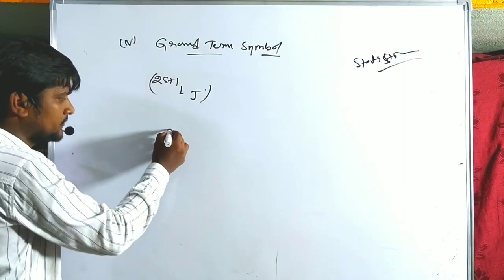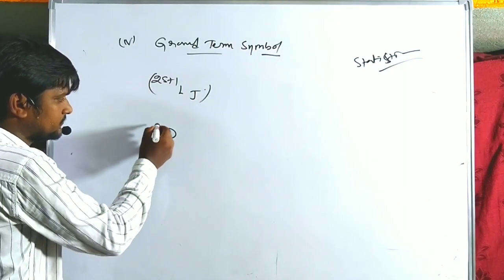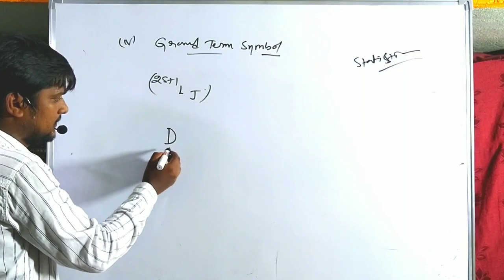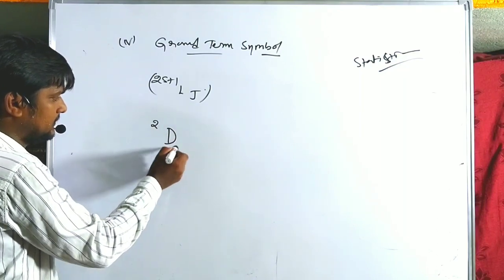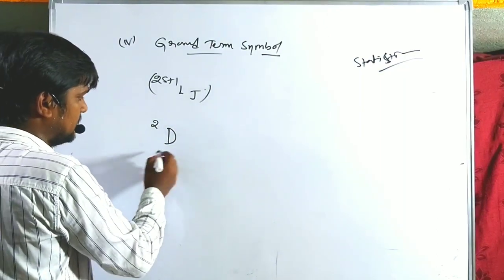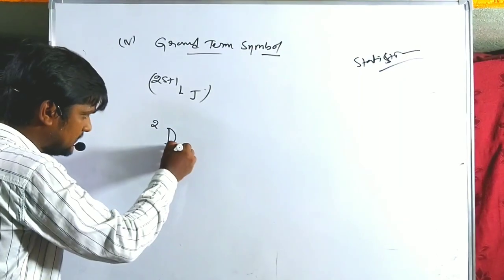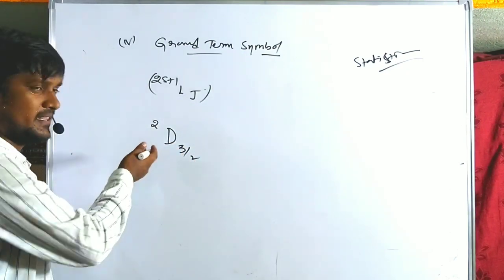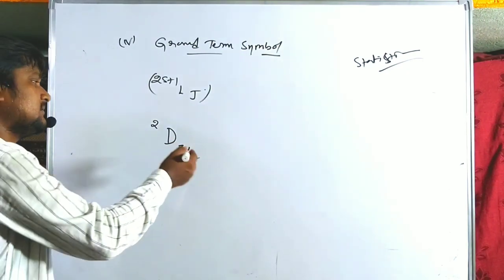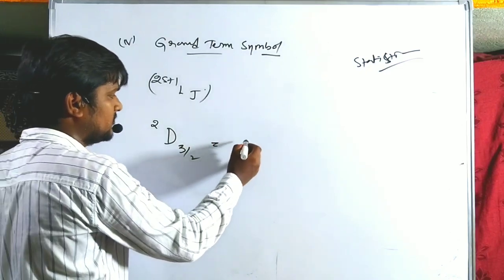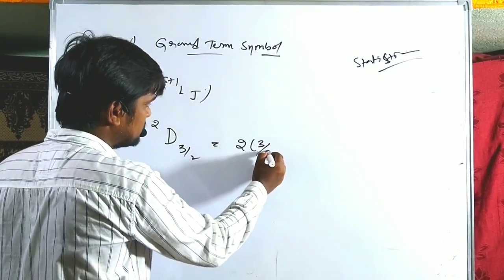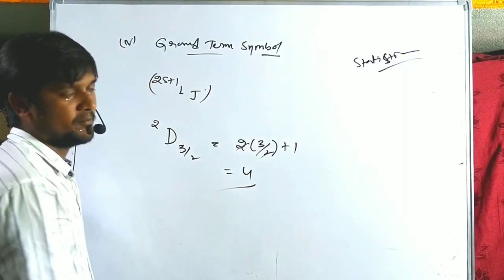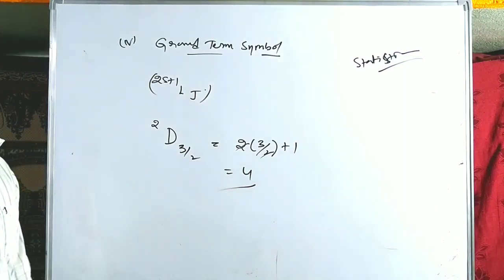Another example: for ²D_(3/2), J=3/2, so 2(3/2)+1 = 3+1 = 4 microstates.